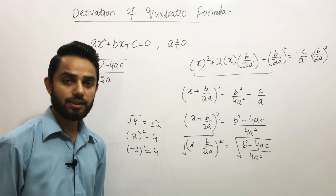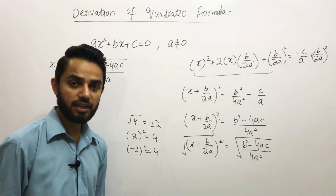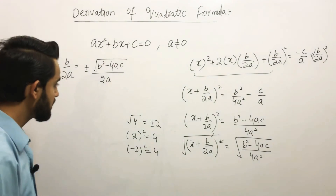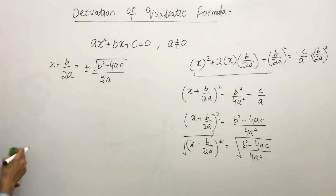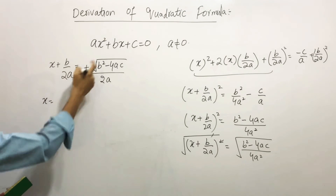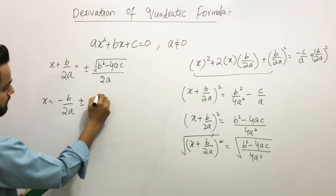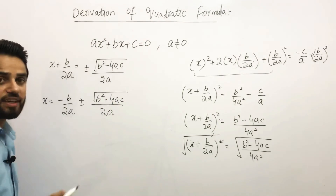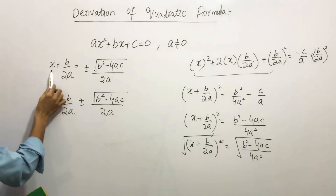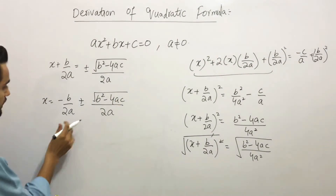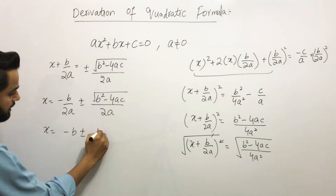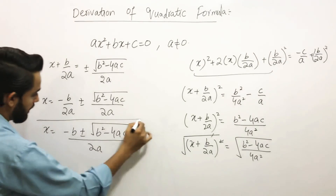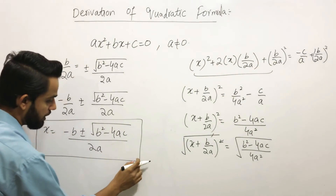To isolate x, we shift b/2a to the other side: x = −b/2a ± √(b² − 4ac) / 2a. Taking the common denominator gives the final result: x = (−b ± √(b² − 4ac)) / 2a. This formula inside the box is your quadratic formula, which you apply to any quadratic equation to find the roots.